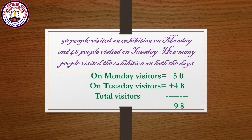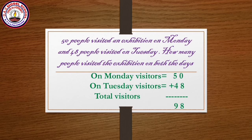Example two: 50 people visited an exhibition on Monday and 48 people visited on Tuesday. How many people visited the exhibition on both days? Monday visitors: 50, Tuesday visitors: 48. We have to find the total visitors.